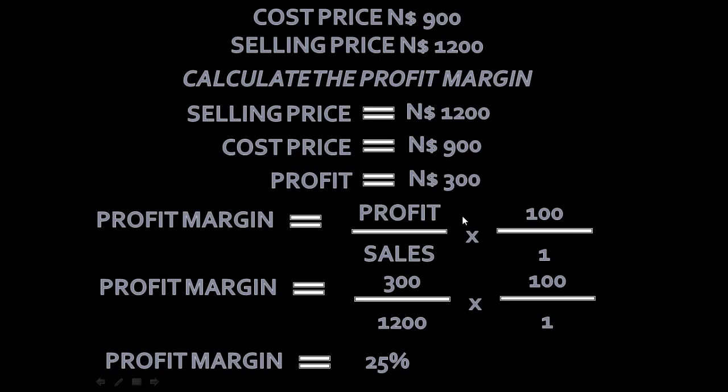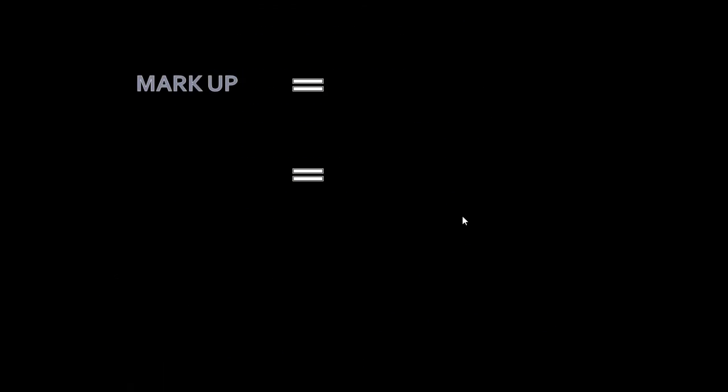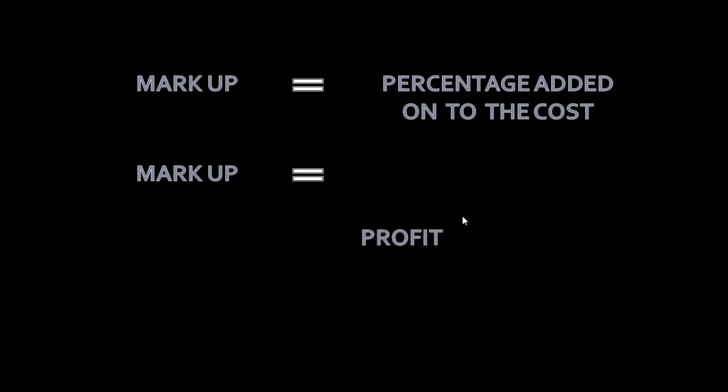Now let's have a look at Markup. Markup is the percentage added onto the cost. So when we work with Profit Margin, we focus on Sales. When we work out Markup, we focus on Cost. So the formula for Markup can be written as Profit over Cost times 100 over 1.